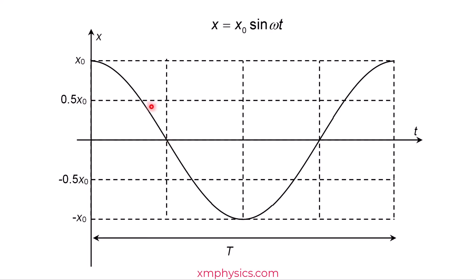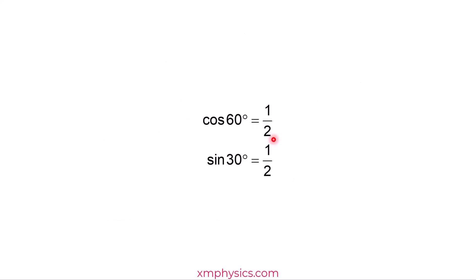So if it's not one-eighth, what exactly is it? Let me check something with you. Are you aware that cosine 60 degrees is one-half and sine 30 degrees is one-half? You need to have these numbers in your head to understand the rest of the video.